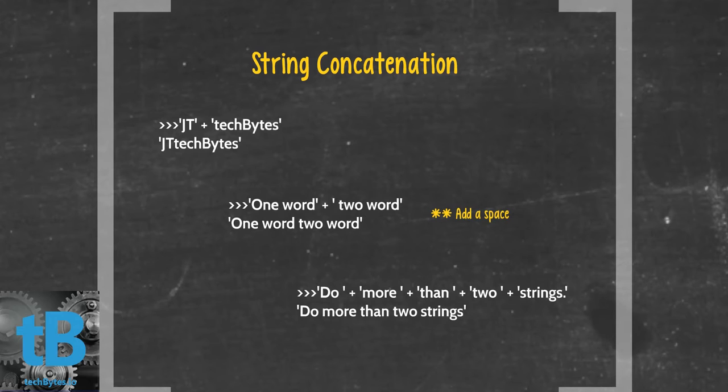Also, when you're concatenating strings, you're not limited to just two strings. You can do multiple strings. Down here, you can see we have one, two, three, five strings showing below. We have the space after the word, before the closing quotation mark. So you can see do, then there's a space quotation mark, plus more space quotation mark. All the way through, which allows us to have the complete sentence do more than two strings without having it all squished together.